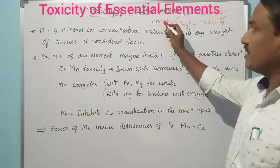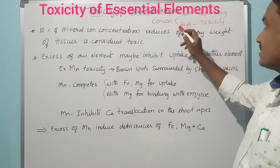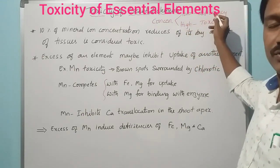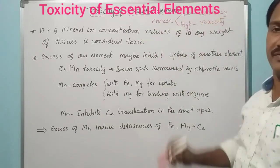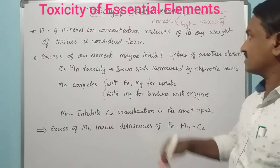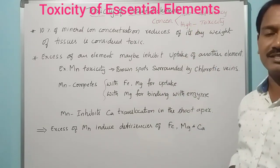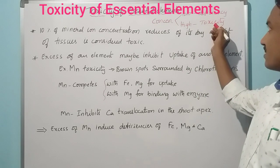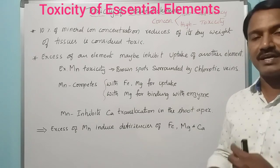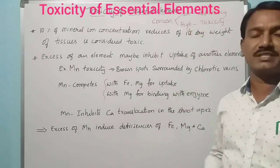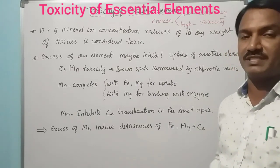When the concentration of an essential element is low — below the critical concentration — it leads to deficiency and shows deficiency symptoms in plants. When the concentration is more than the critical concentration, it leads to toxicity. So low concentration leads to deficiency symptoms and high concentration leads to toxicity in plants.